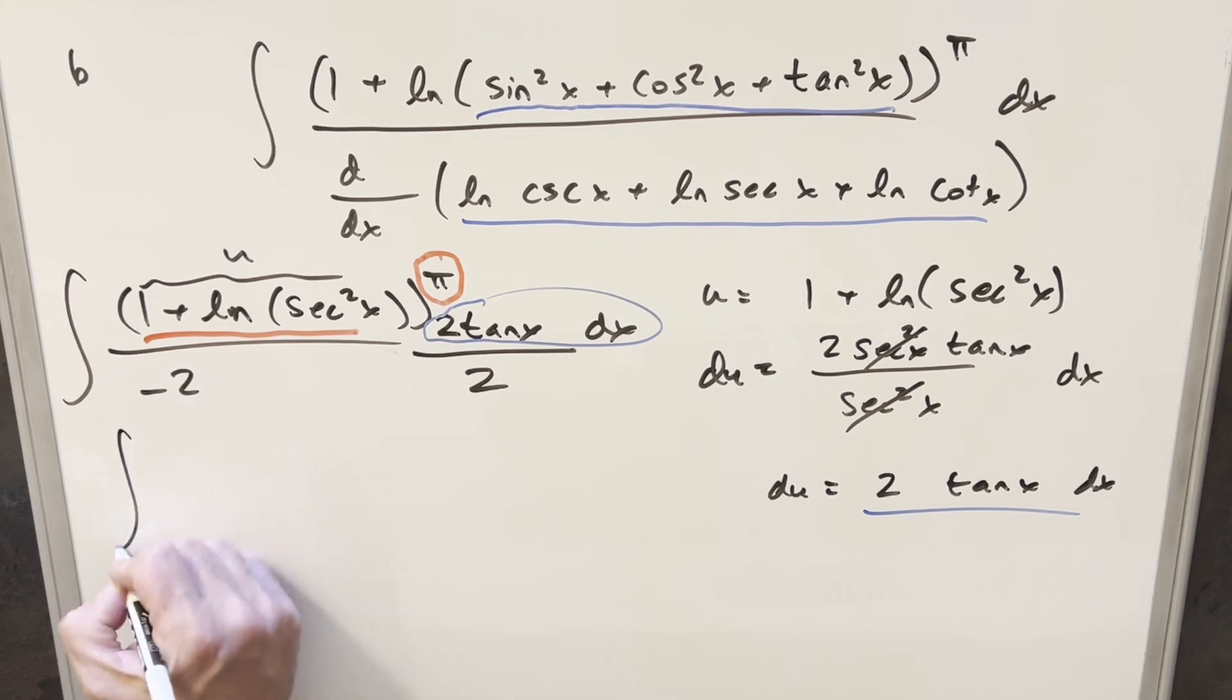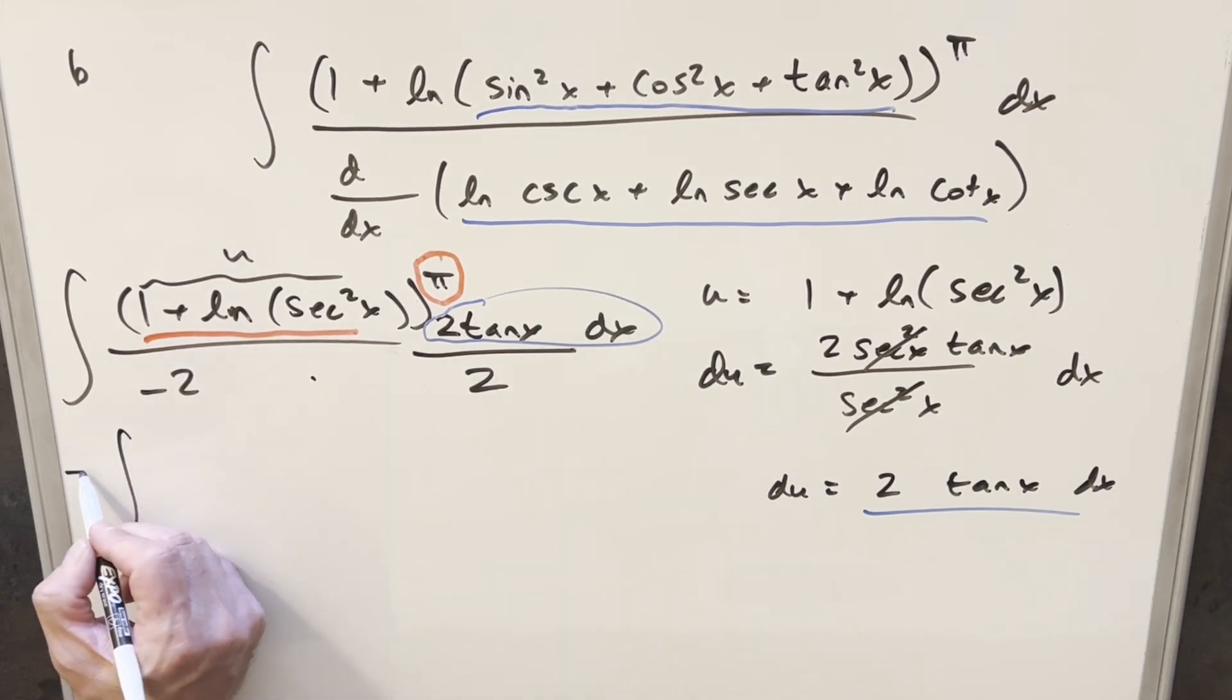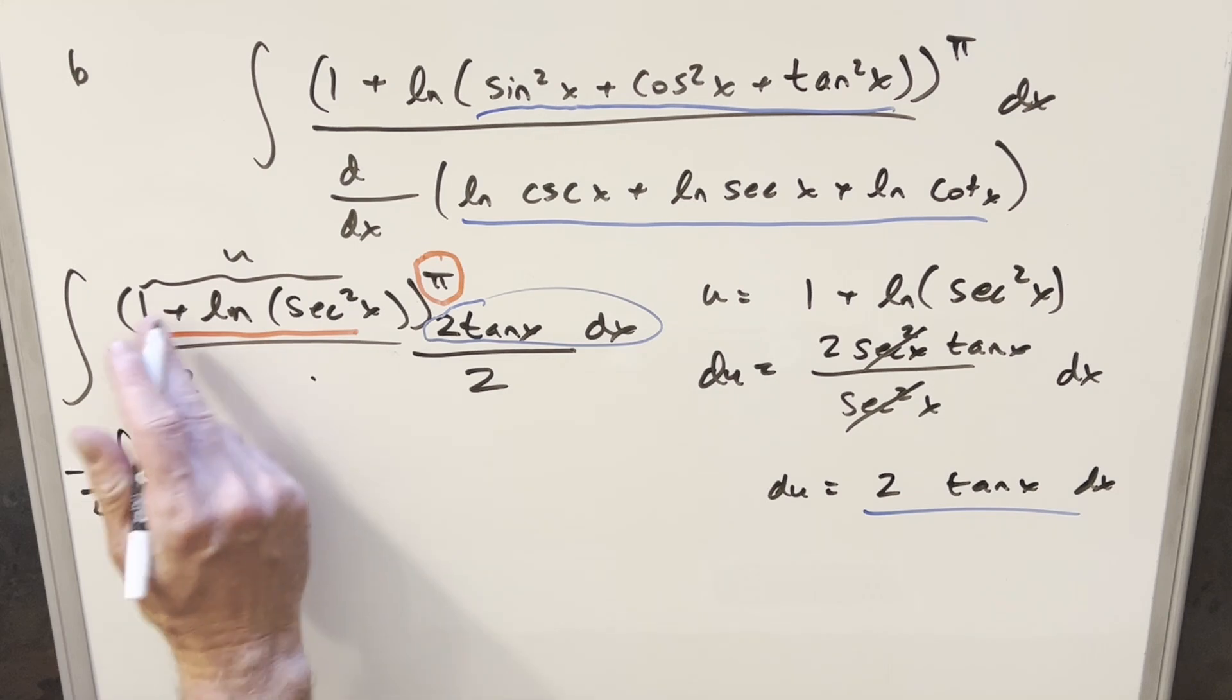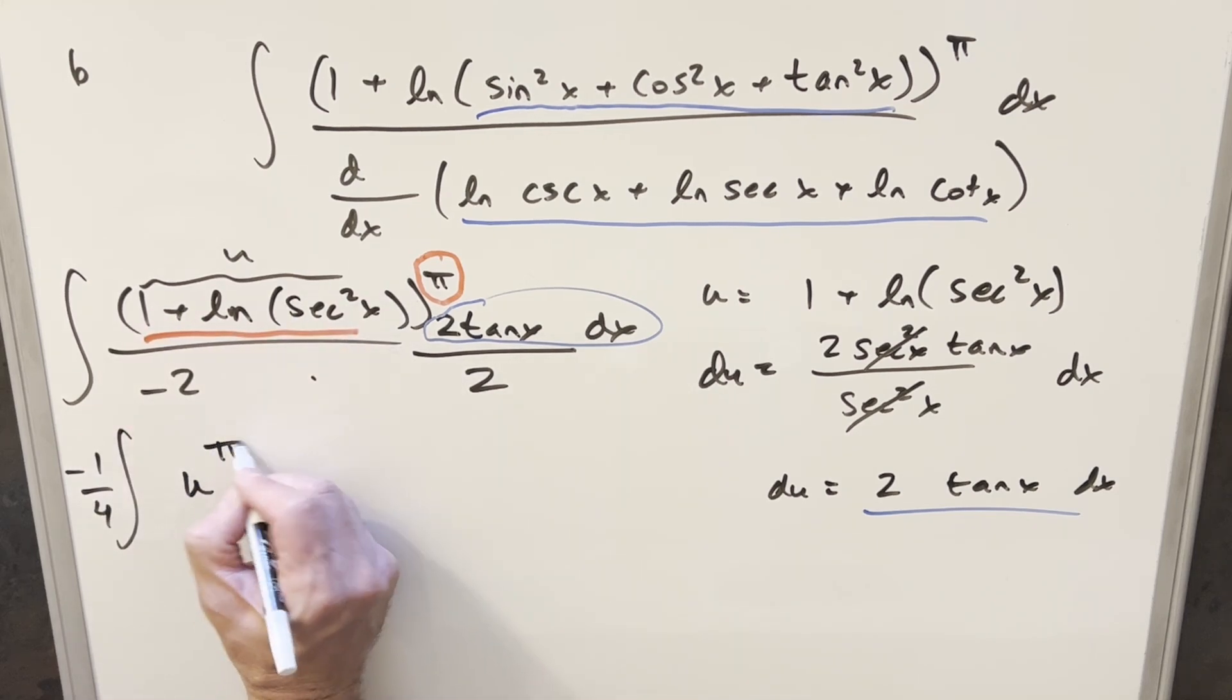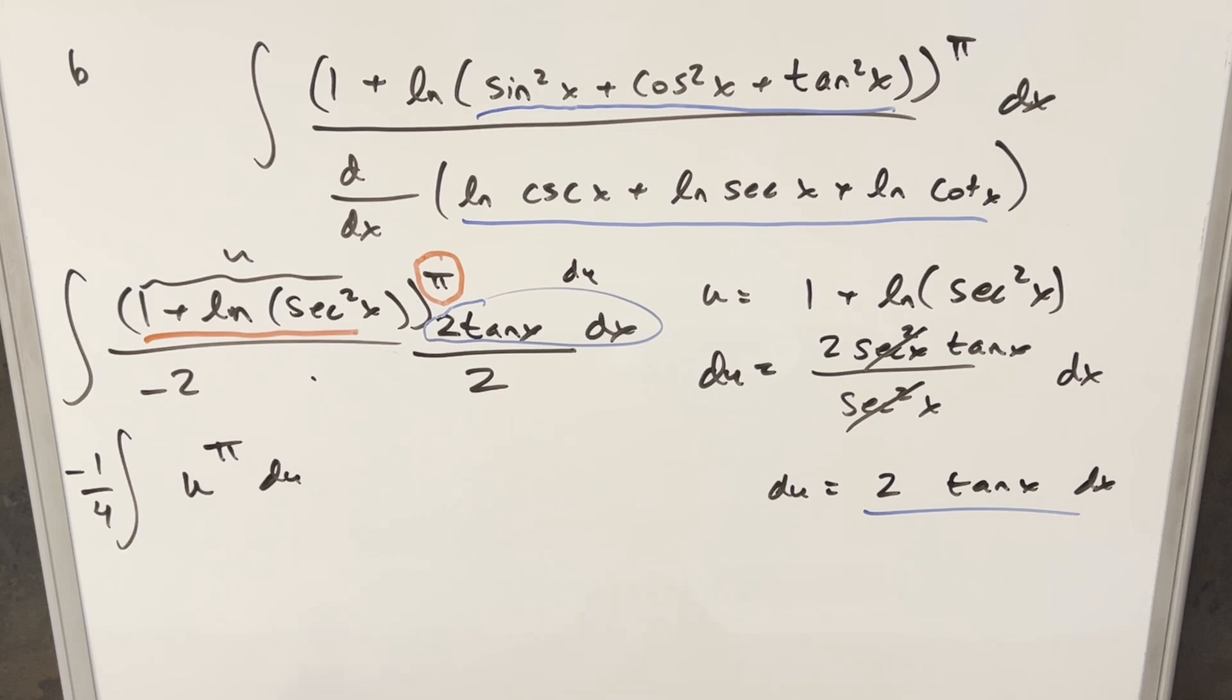So now I'll just go ahead and substitute. But let's put together in the denominator here, we've got minus 2 times 2. I'll write this as minus 1 fourth here. All this stuff is just going to become u to the pi. And then this thing here is our du. But now pi is just a constant, so we can just use power rule on this.